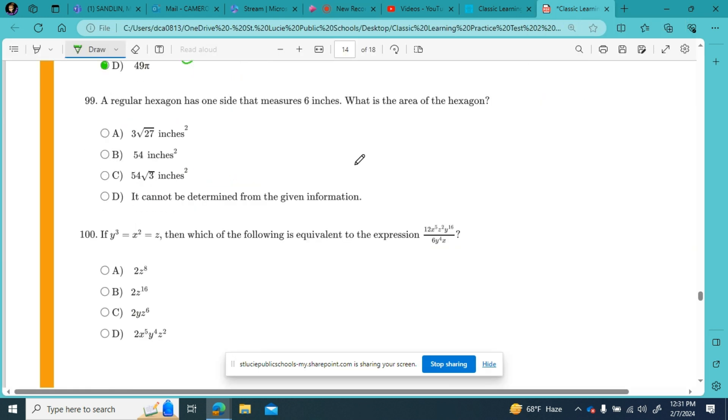I've got time for number 99 on this video. It says, a regular hexagon has one side that measures six inches. What is the area of the hexagon? A hexagon is a figure with how many sides? Six sides. And being that it's a regular hexagon, those six sides are all going to be equivalent. They're going to be equal. So one, two, three, four, five, six.